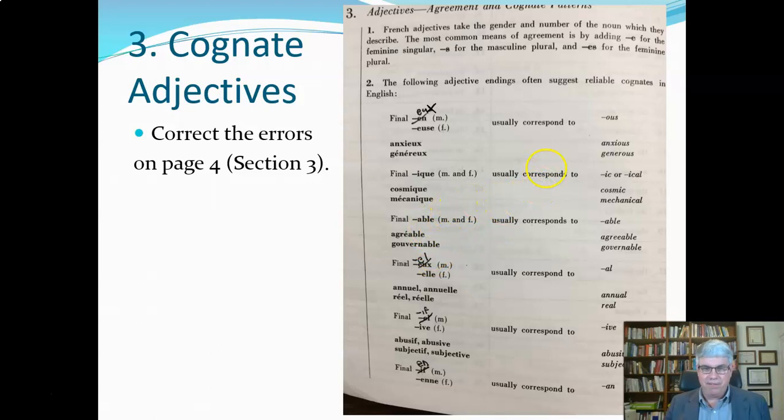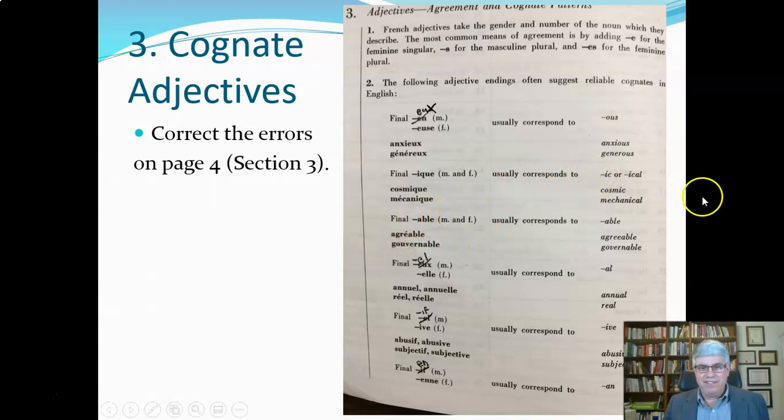'Gouvernable' is a word not often used to describe French people, as they often joke. The French are known for being very frank — in fact, the word 'frank' comes from the word 'French.' They do not see themselves as an agreeable people, and their history indicates, as they well know, that they are not very governable, as we'll see in a text near the end of the class.